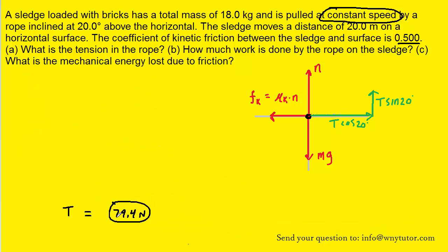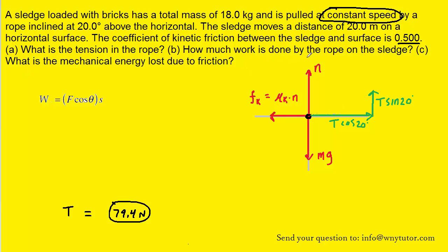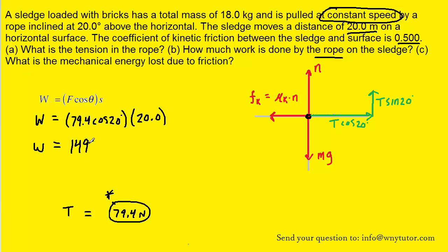Holding on to that result, we move to Part B, which asks how much work is done by the rope on the sledge. Work equals force times cosine of the angle times displacement. The tension force acts at 20° relative to the direction of motion, so the angle is 20°. The force is 79.4 newtons and the displacement given is 20.0 meters. This gives a work of approximately 1,492 joules, or equivalently 1.492 kilojoules.